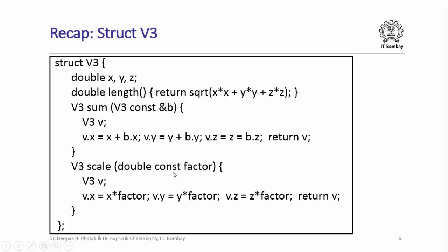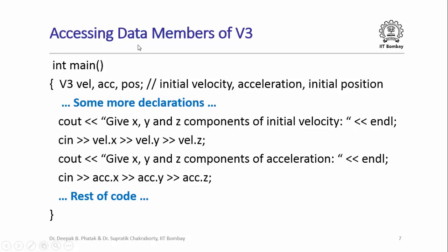Recall the three dimensional vector structure that we had already studied in the last couple of lectures. We had defined a C++ structure called V3 which had three data members named X, Y and Z to store the Cartesian coordinates of a three dimensional vector. Each of these members was of type double, and we also had three member functions named length, sum and scale for performing different kinds of operations on these three dimensional vectors. Recall how we also accessed data members of the structure V3. For example, in the motion simulator program in the main function, we had variables like velocity, acceleration and position all of type V3, and we actually read in the X, Y and Z components of velocity, acceleration and so on in this manner.